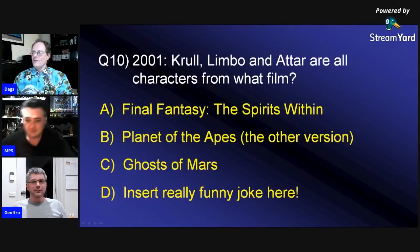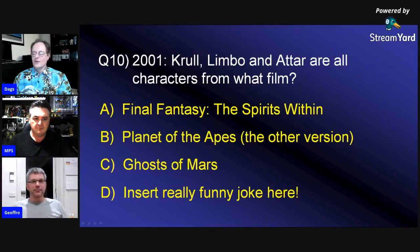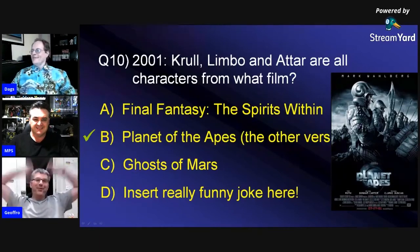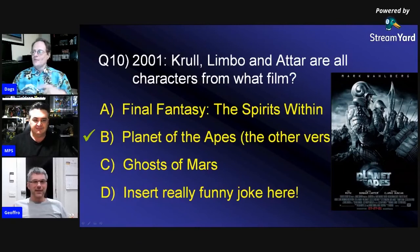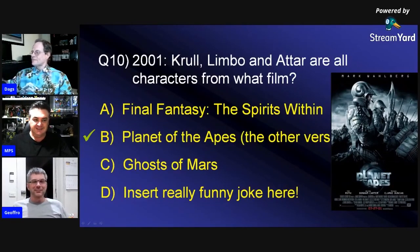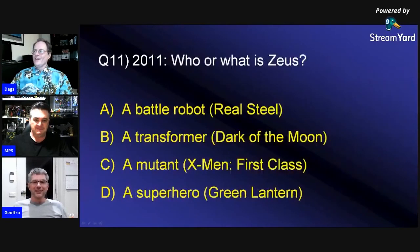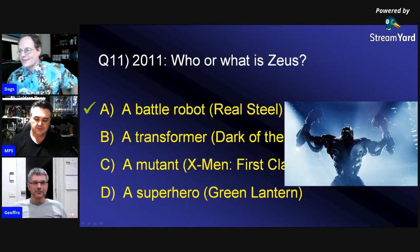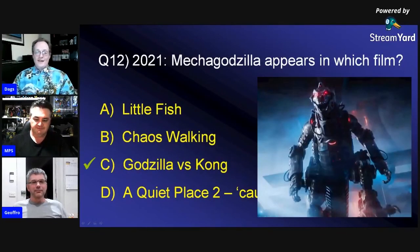2001 — Krull, Limbo and Atar are all characters from what film? Geoff, you said Planet of the Apes. Dude said Ghost of Mars. It is actually Planet of the Apes. I deliberately didn't include Thade because that would have been a dead giveaway. 2011 — who or what is Zeus? Real Steel — it was the battle robot. And 2021 — MechaGodzilla was in Godzilla vs. Kong. I thought I'd give you an easy one at some point.